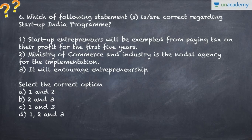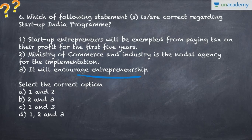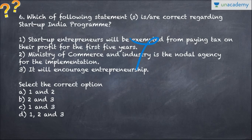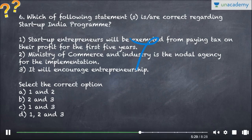Question six: Which statements are correct regarding the Startup India program? Startup entrepreneurs are exempted from paying tax on profit for the first three years — not five years, so the first statement is incorrect. Ministry of Commerce and Industry is the nodal agency for implementation — this is correct. It encourages entrepreneurship — also correct. Answer is B — two and three only.